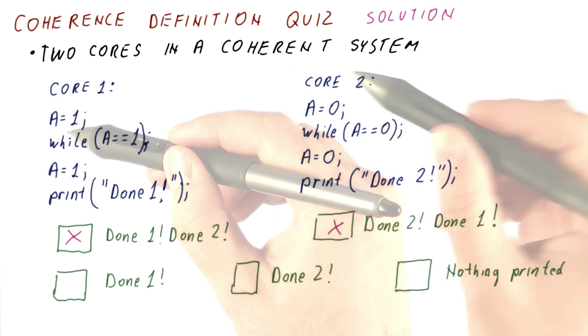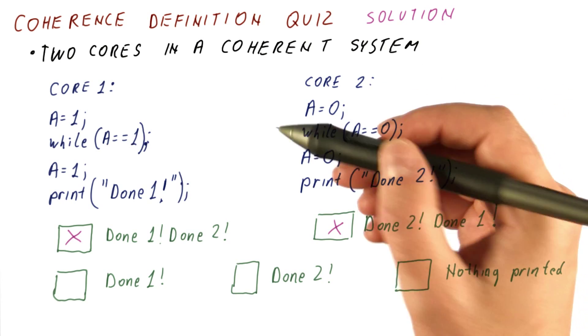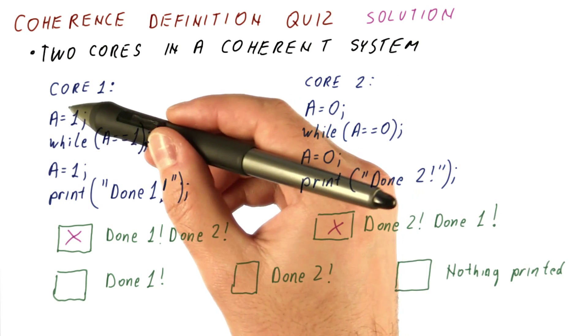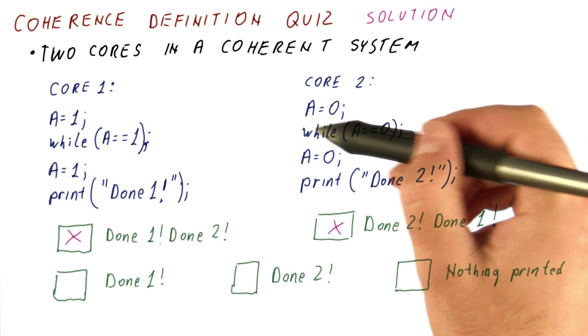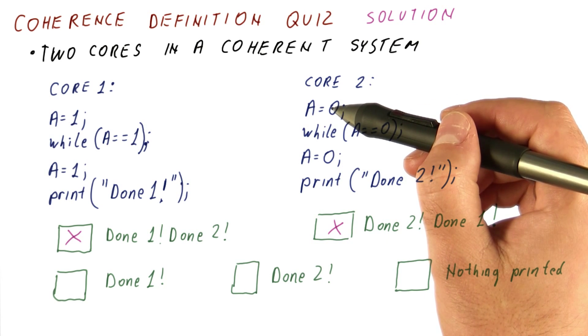It's also important to notice that it's not possible for, for example, A equals one, and A equals zero, to happen one after the other. And then core one thinks that this was the last write, so it gets stuck here.